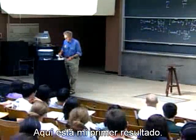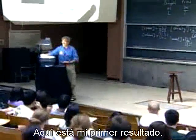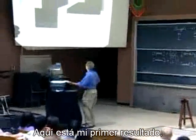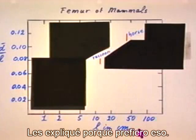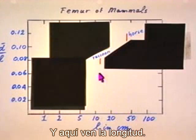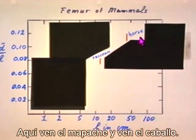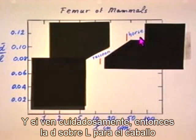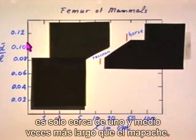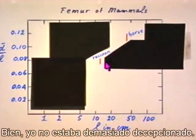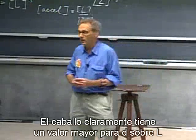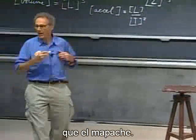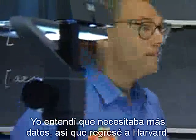Here is my first result. We see D over L on the vertical axis and length on the horizontal axis. You see the raccoon and you see the horse. If you look carefully, the D over L for the horse is only about one-and-a-half times larger than the raccoon. I wasn't too disappointed — one-and-a-half is not two, but it is in the right direction. The horse clearly had a larger value for D over L than the raccoon. I realized I needed more data, so I went back to Harvard.